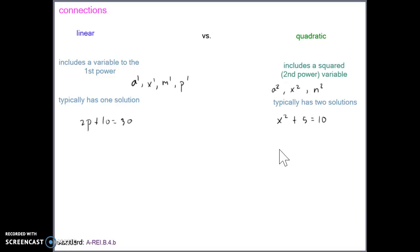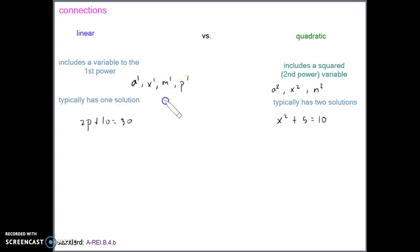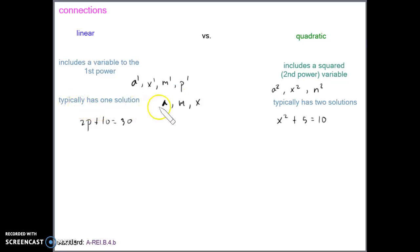I want to begin by drawing the connection between linear and quadratic. Linear equations are equations that include variables to the first power — a to the first power, x to the first power, m to the first power, p to the first power. We normally see these as just a, m, x without an exponent of 1, but it's the multiplicative identity that allows us not to have to write the exponent of 1. Typically these linear equations have one solution — most of the equations we've dealt with so far have resulted in one solution.